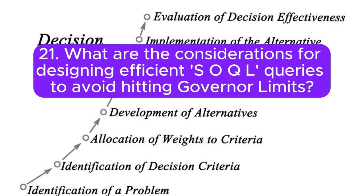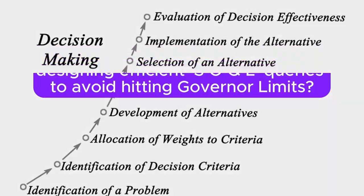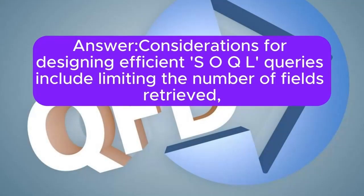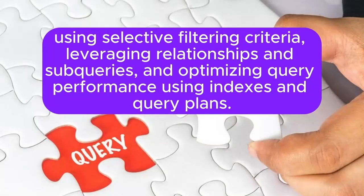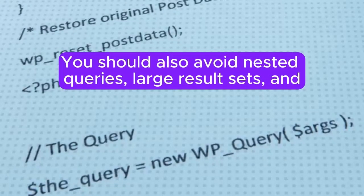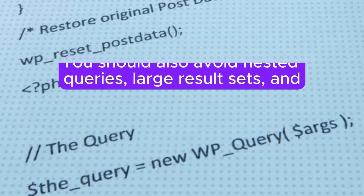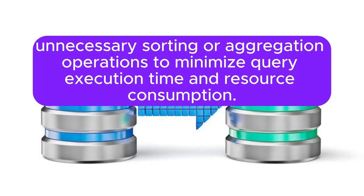Question 21: What are the considerations for designing efficient SOQL queries to avoid hitting governor limits? Answer: Considerations include limiting the number of fields retrieved, using selective filtering criteria, leveraging relationships and subqueries, and optimizing query performance using indexes and query plans. You should also avoid nested queries, large result sets, and unnecessary sorting or aggregation operations to minimize query execution time and resource consumption.